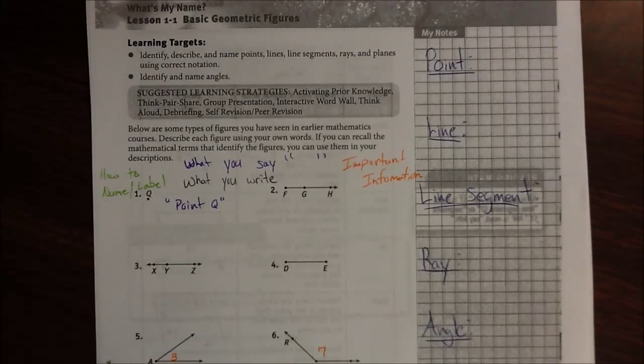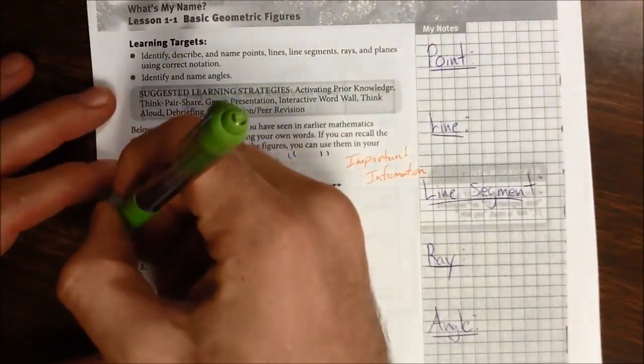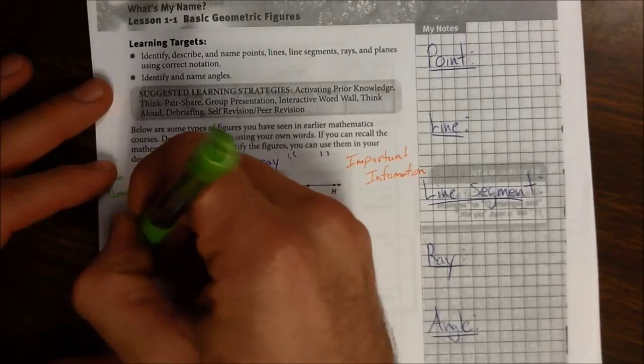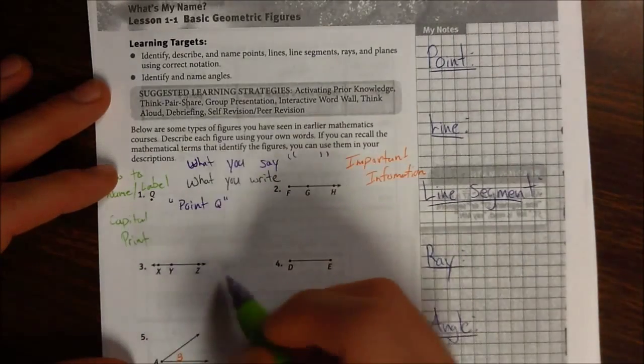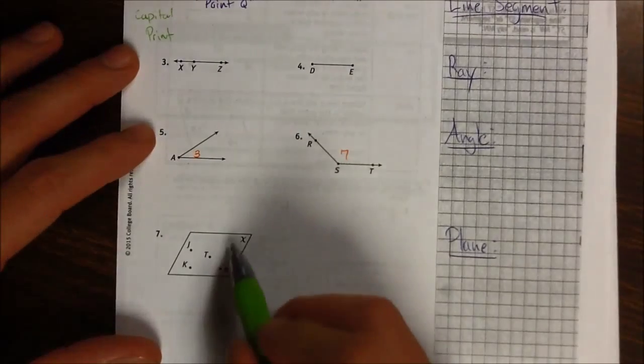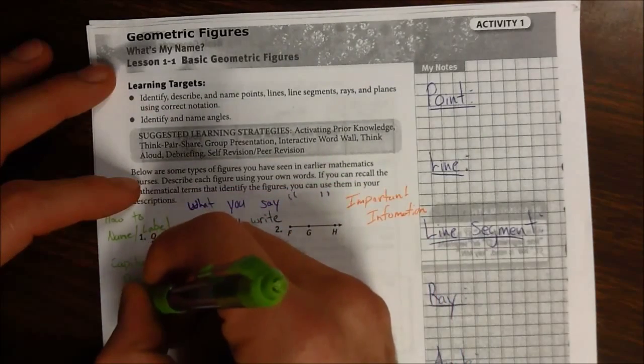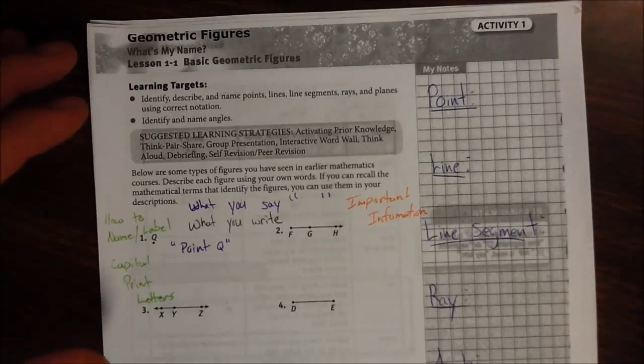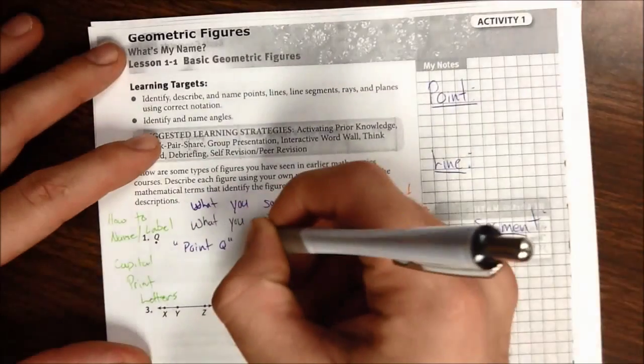Points are always labeled with a capital print letter. Very important that you know and recognize the difference between a print and a cursive letter. This is a print letter, that's all print. But later down here, that's cursive, it's loopy. Some people call it script writing. But when you're talking about a point, it needs to be capital and it needs to be print letters.